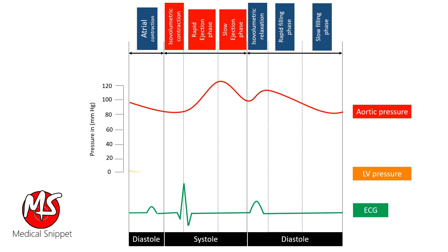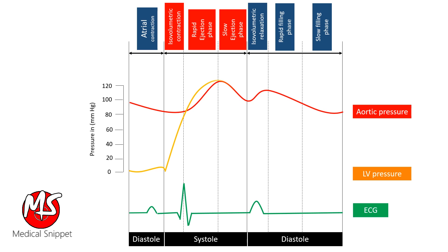Coming to LV pressure tracing: during isovolumetric contraction, the ventricle contracts in a closed chamber as both the aortic and mitral valves are closed, so pressure rapidly rises in the LV. When the pressure in the LV rises above the aortic pressure, the aortic valve opens and the ejection phase starts. At the end of ejection, the LV pressure drops below the aortic pressure, the aortic valve closes, and the isovolumetric relaxation phase starts.